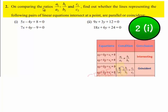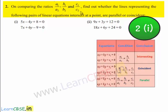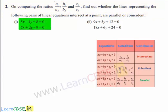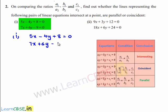Coming to the second problem, on comparing the ratios a1 by a2, b1 by b2, and c1 by c2, find out whether the lines representing the following pairs of linear equations intersect at a point, are parallel, or coincident. The first set of equations is 5x minus 4y plus 8 is equal to 0 and 7x plus 6y minus 9 is equal to 0.